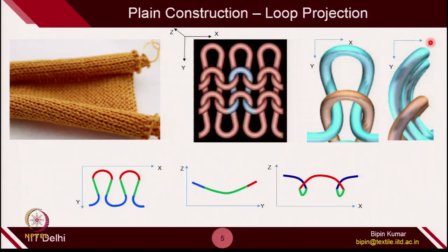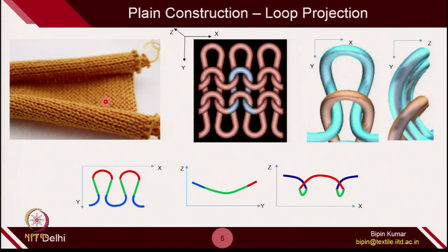If you see the nature of this bending, these loops will try to rotate in the anticlockwise direction. Because it is locked, z will decrease — the top loops want to go towards the front side of the fabric. This is why, along the course, this fabric tries to curl from the back side to the front side. And if you see the wale direction, the nature is opposite — it will try to come from the front side to the back side. This is how the nature of projection decides the mechanics of the fabric.